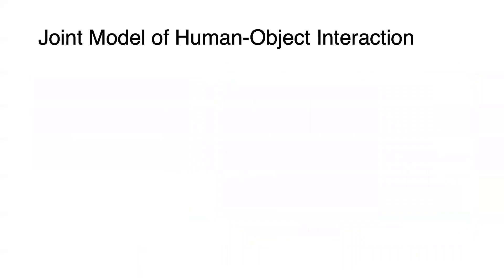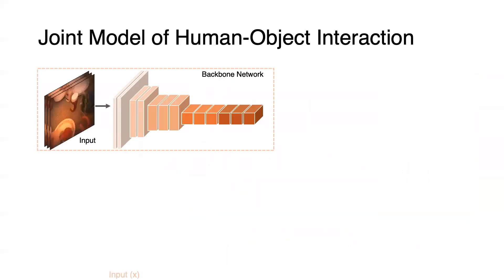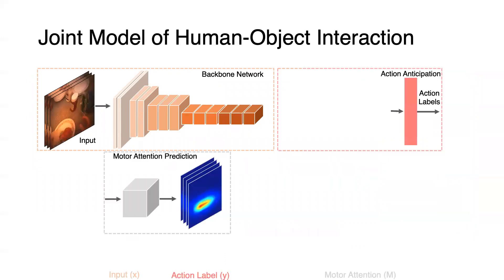The proposed joint model takes video frames X as input and outputs future action label Y, motor attention M, and interaction hotspots A.